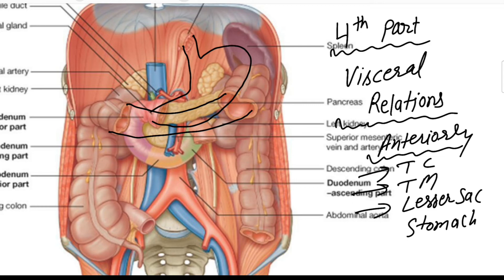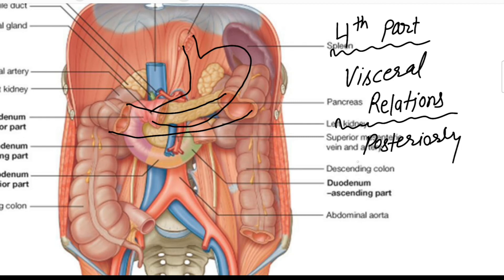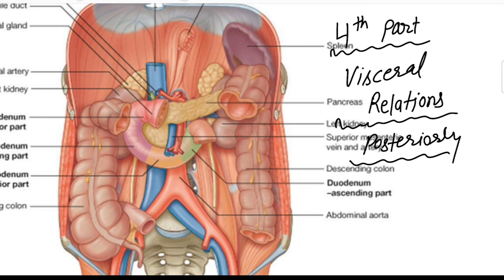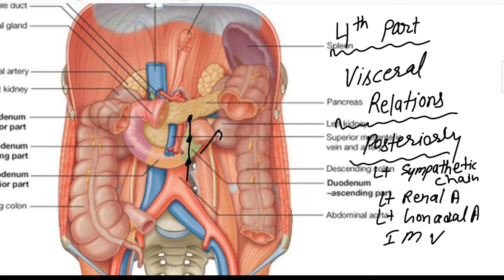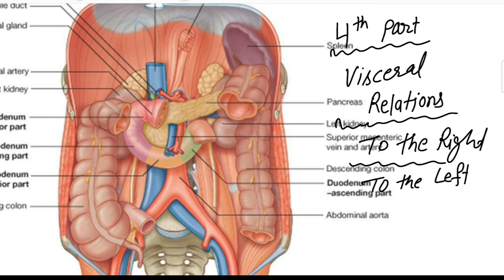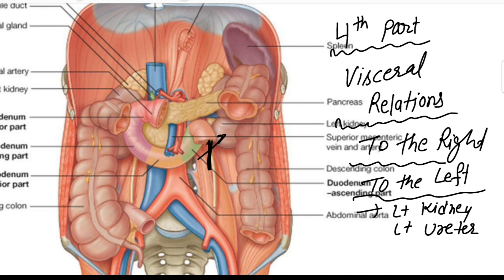The anterior relations of the fourth part are the transverse colon, transverse mesocolon, lesser sac, and stomach. Posteriorly, it is related to the left sympathetic chain, left renal artery, left gonadal arteries, and inferior mesenteric vein. To the right side lies the root of the mesentery, and to the left side are the left kidney and left ureter.